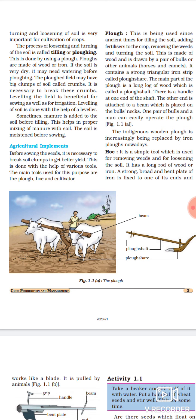Plow is used for adding fertilizers to the crop, removing the weeds and turning the soil. Soil ko turn karne ke alawa, crops pe jab fertilizers use karna hota hai tab bhi hum plow hi use mein lete hai. Aur iske alawa jab weeds - weeds yani ki unwanted plants, jo jungli ped ug jate hai field mein, jo humko nahi chahiye hote - unko hatane ke liye bhi hum plow ko hi use mein lete hai.